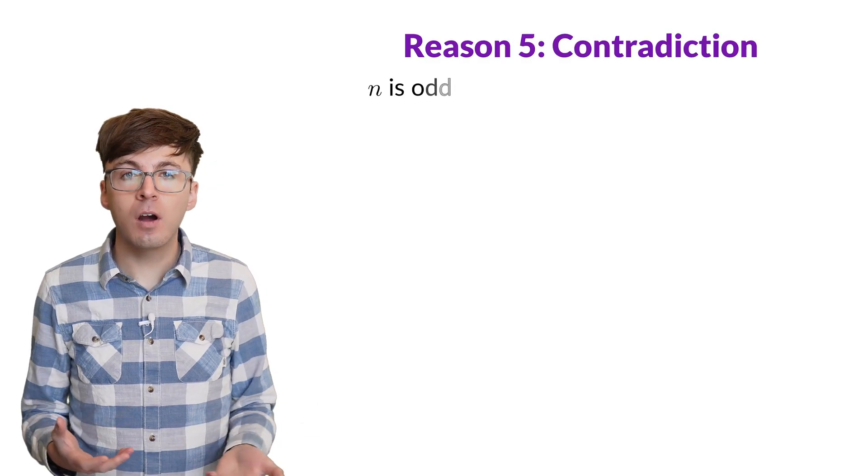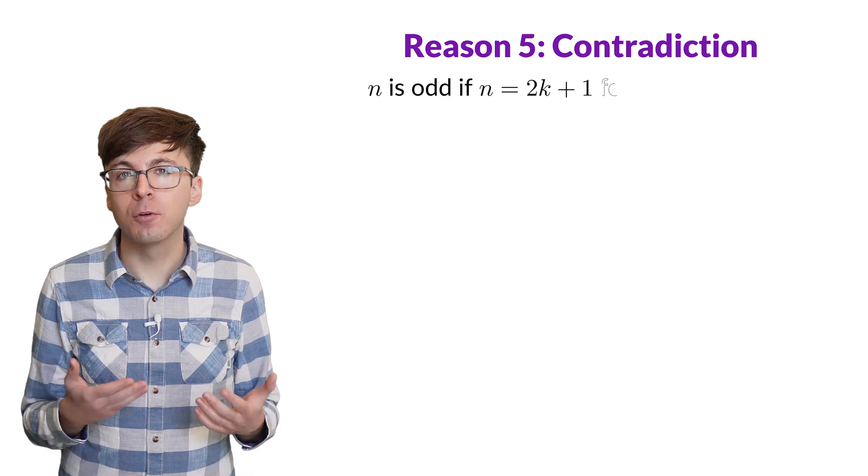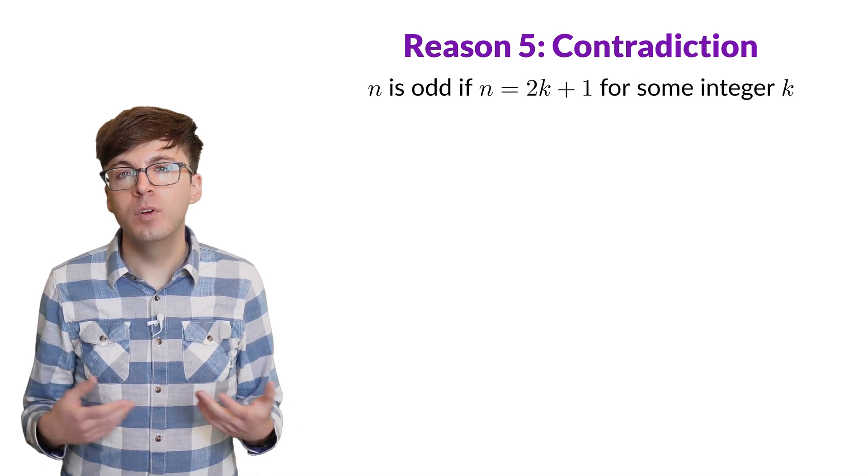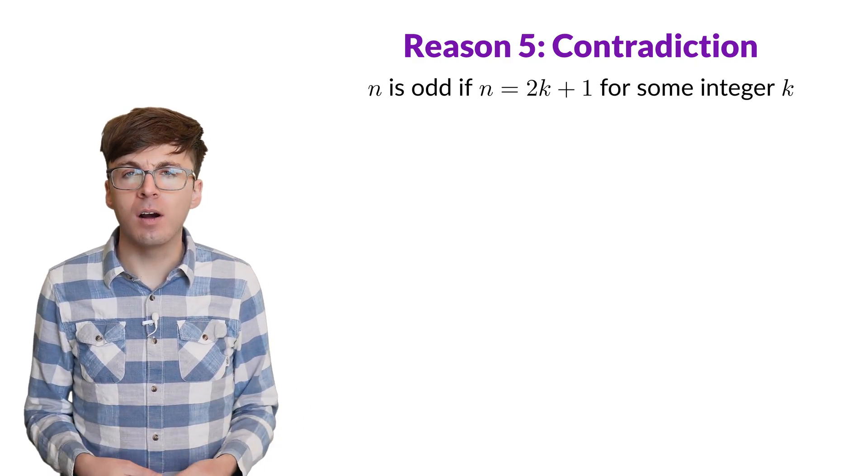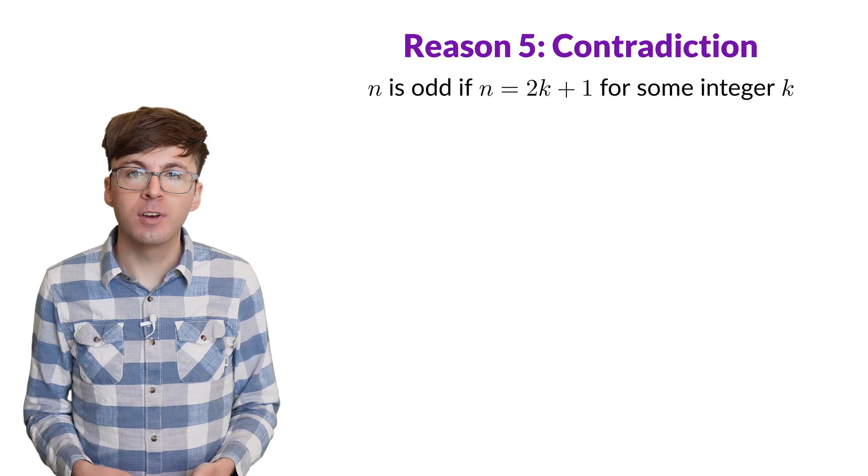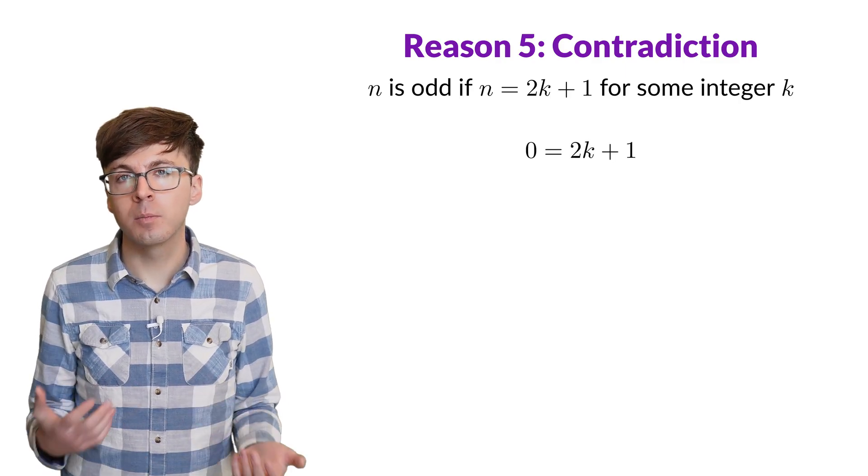Let's now move to some algebraic reasons. An integer n is odd if it can be written as n equals 2k plus 1 for some integer k. When we split n into two equal groups, there's one left over. So could 0 be odd? Let's try a proof by contradiction by assuming that 0 equals 2k plus 1 for some integer k.